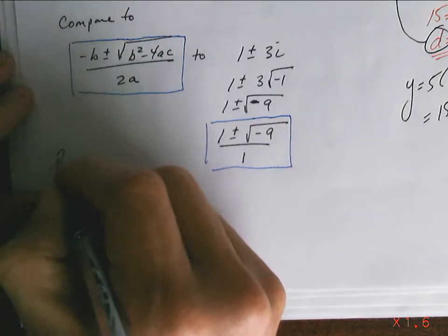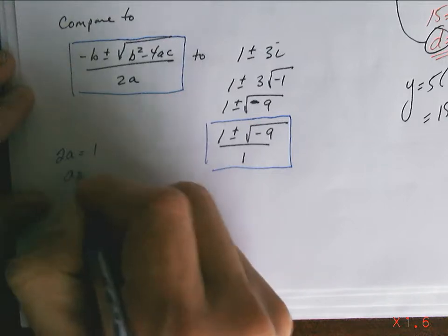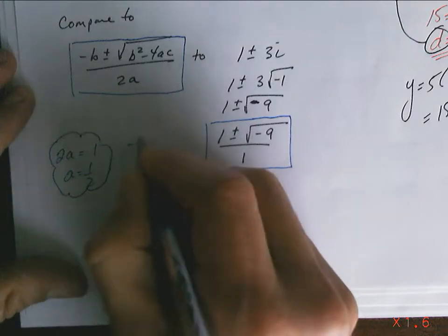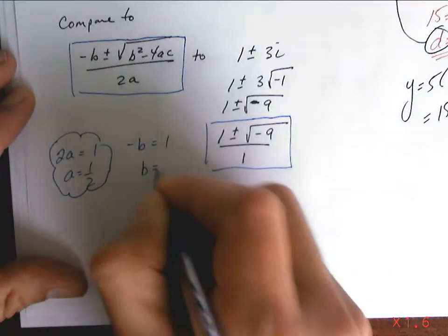OK, so 2a equals 1, a equals 1 half. Minus b equals 1, b equals negative 1.